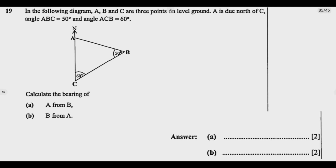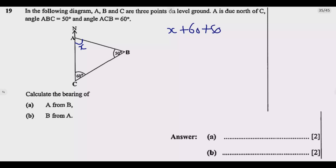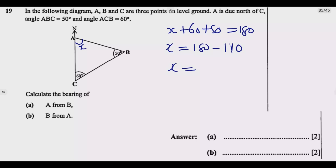Clockwise means we move like this. So based on that, this angle X — if you say X plus 60 plus 50 — must equal 180. So X is equal to 180 minus 110, which means X is equal to 70.